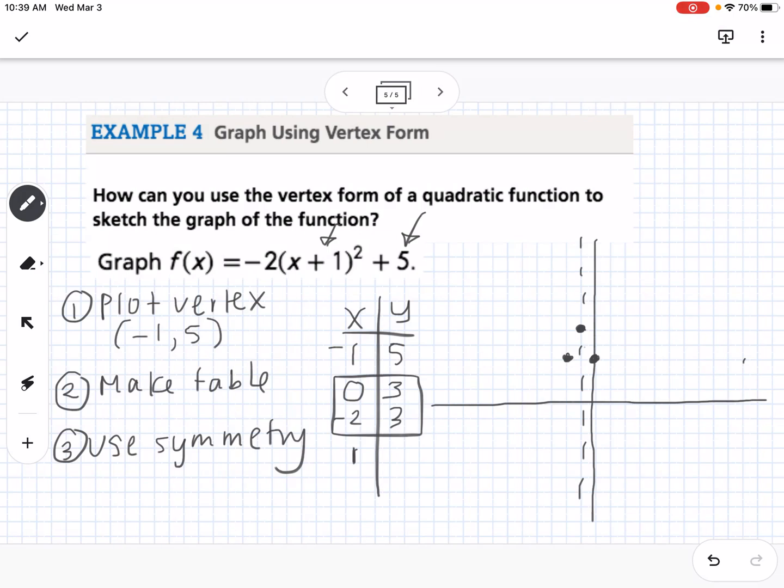So now I'm going to plug in the point 1, the x value of 1, and if I plug that in, I get -3. So 1, -1, 2, 3 would be right there. So then again, using symmetry, I can say the x value of -3 would also be at -3. And then I can sketch in my graph.